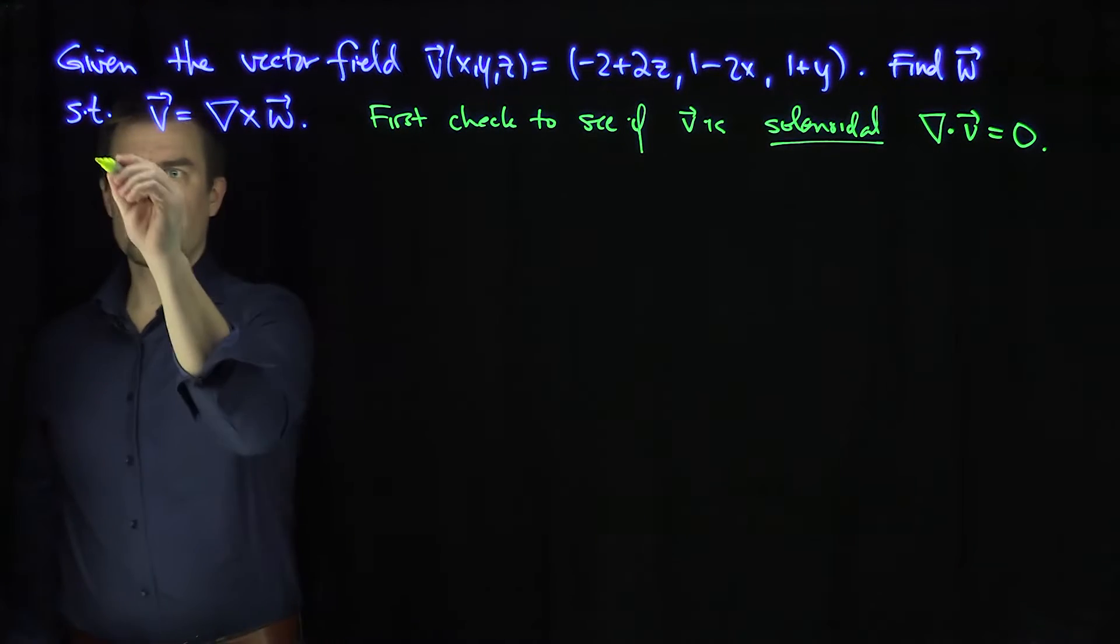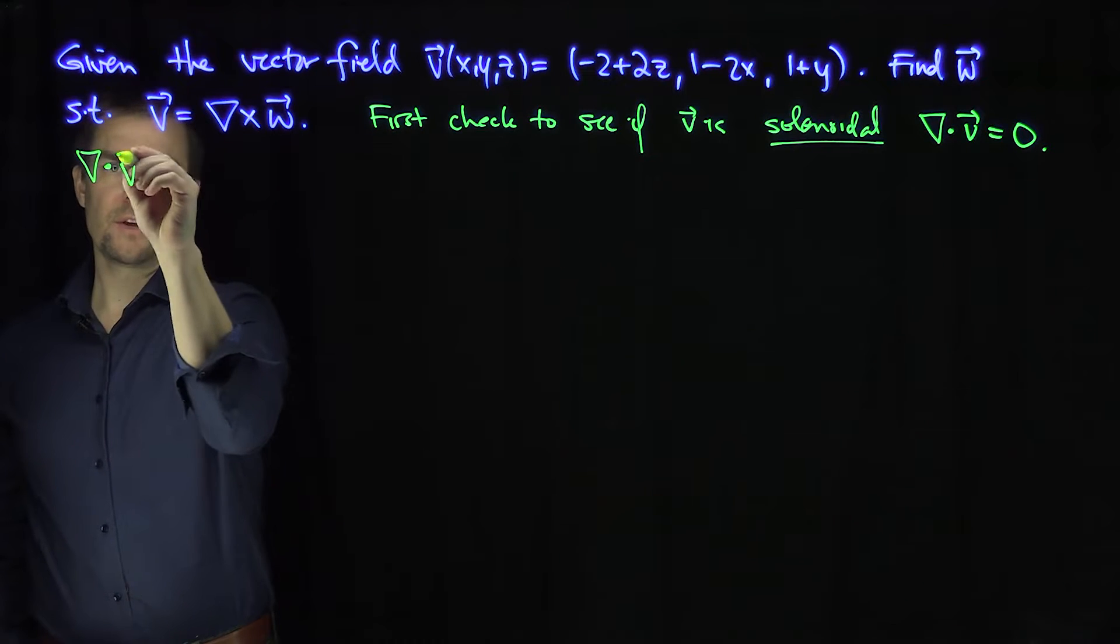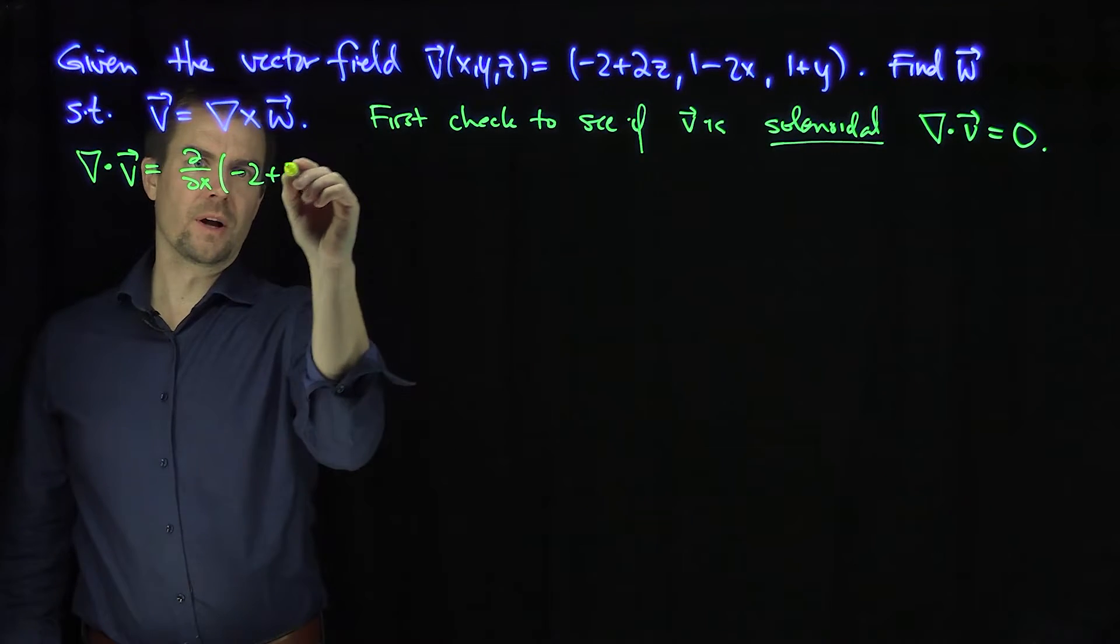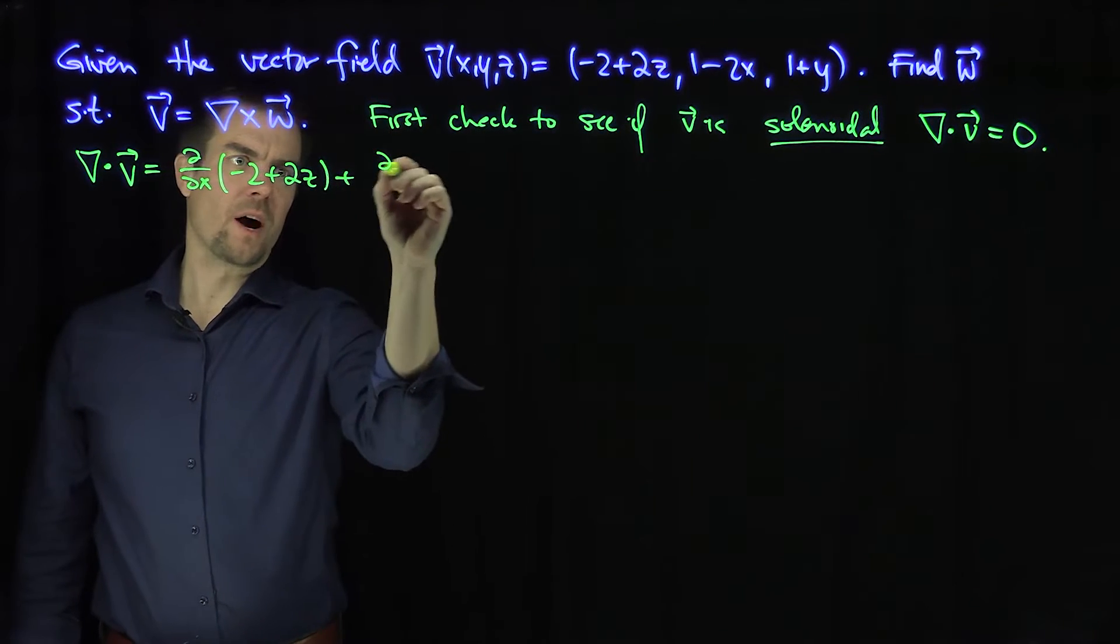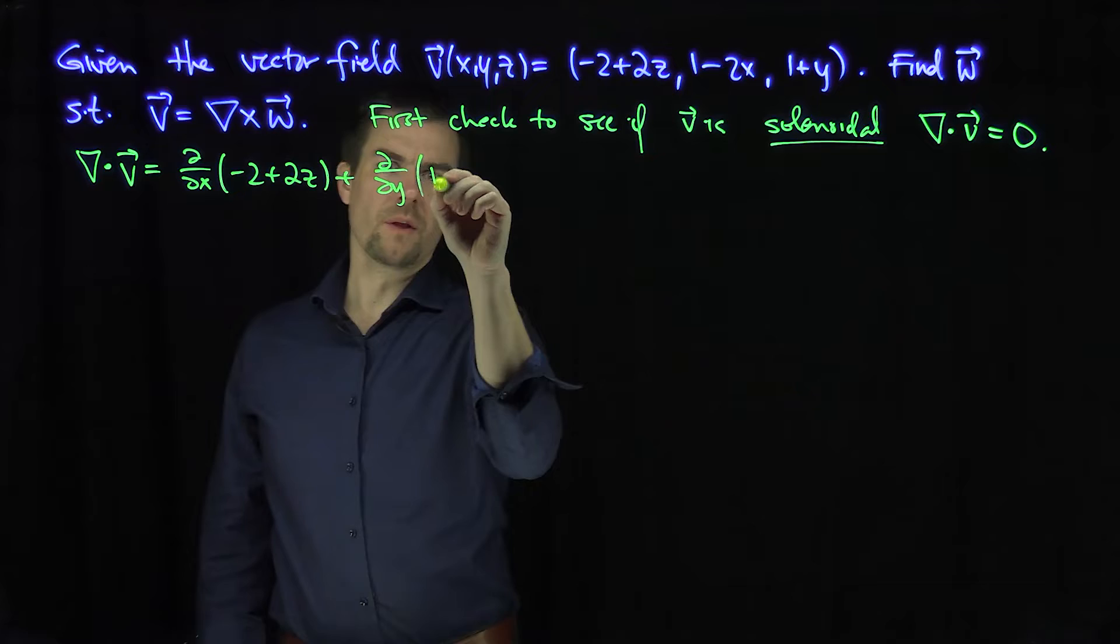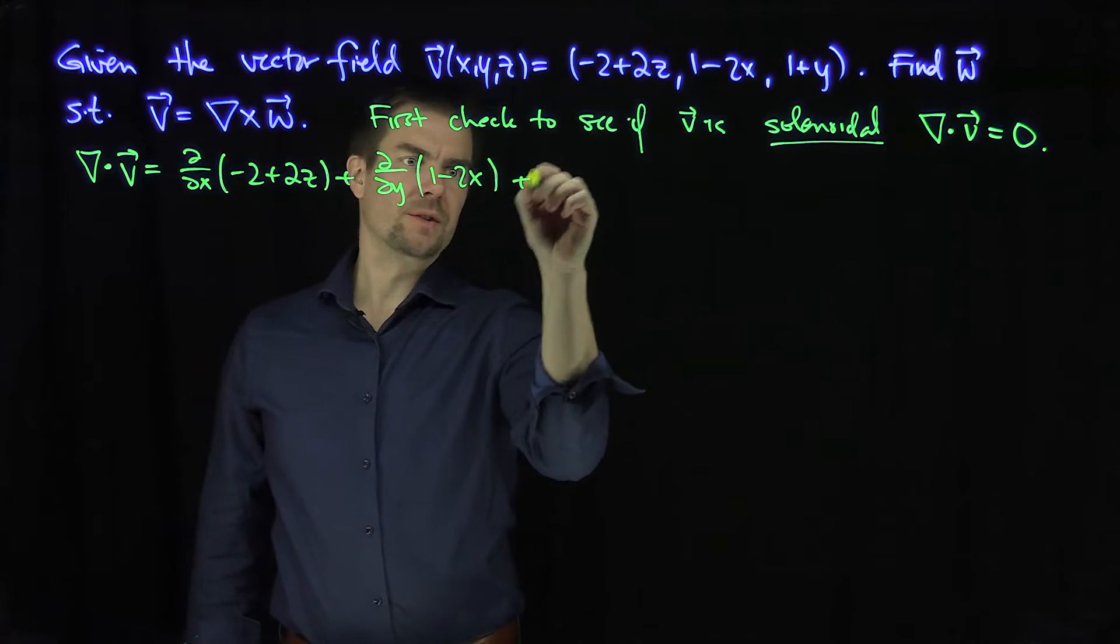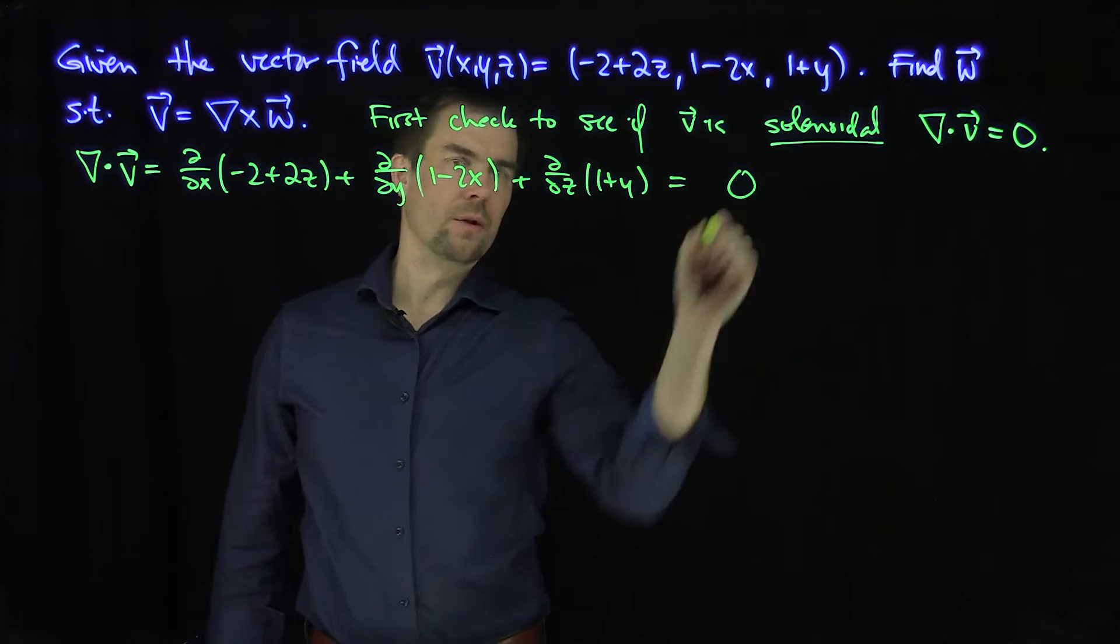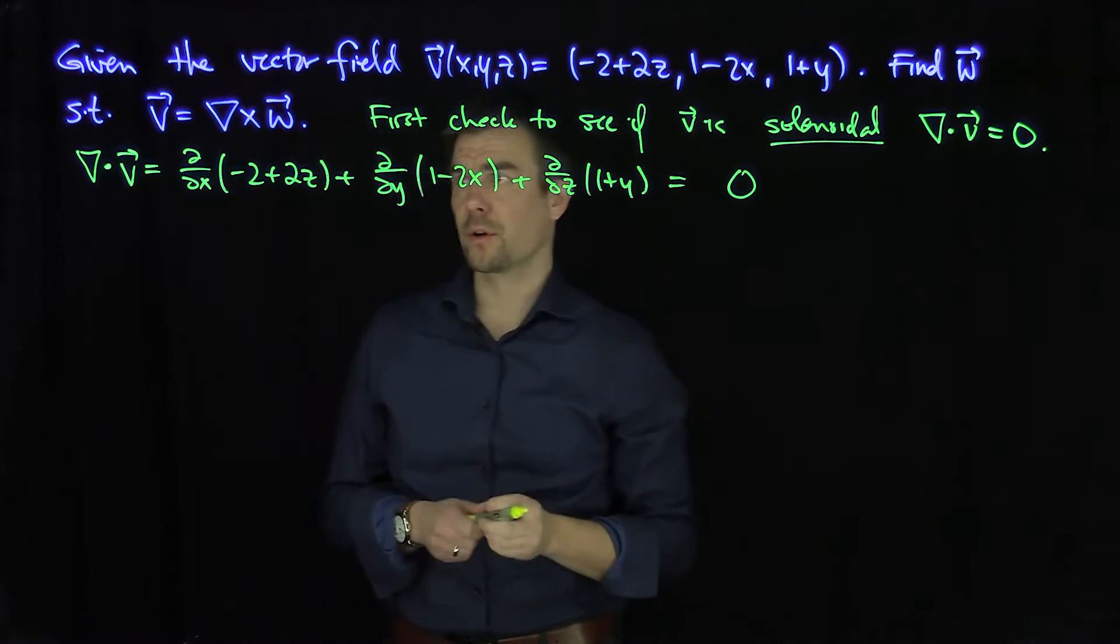So let's do the divergence of v. The divergence of v is going to be the x derivative of negative 2 plus 2z plus the y derivative of 1 minus 2x plus the z derivative of 1 plus y. And we can clearly see that all those terms are 0. So the divergence is 0, so this is a solenoidal vector field.